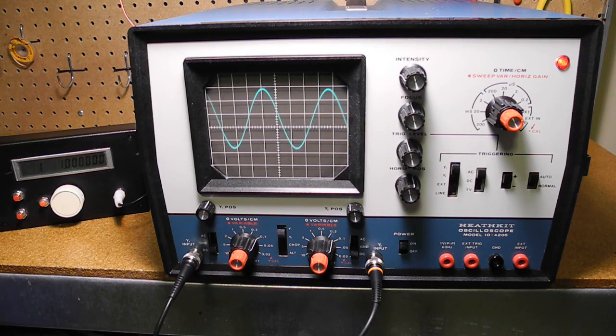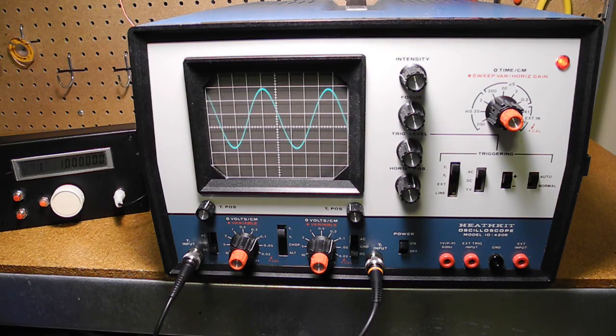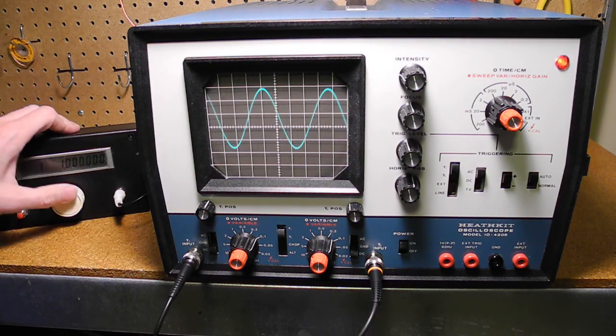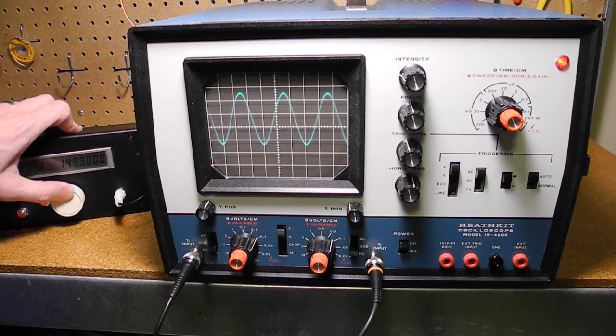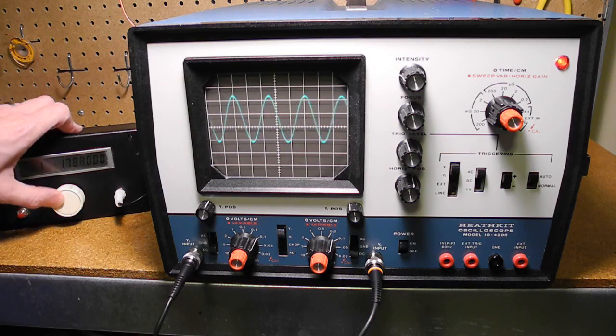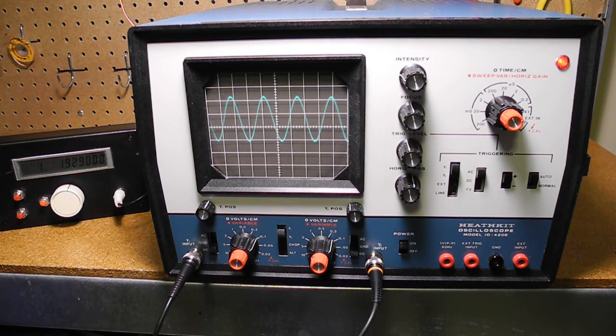If we increase the frequency, the amplitude drops off as we exceed the bandwidth of the scope. It was rated as within plus or minus three dB to five megahertz. My testing shows that it drops off quite slowly and higher frequencies can still be observed, just with reduced amplitude.